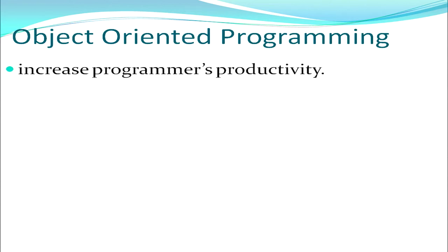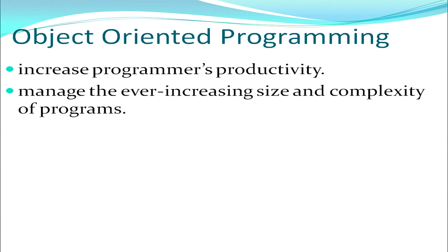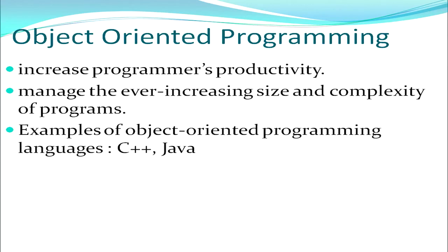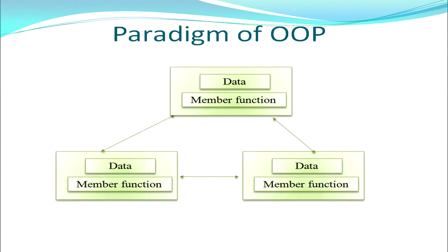First and foremost, let us understand what is object oriented programming. It is definitely a tool that helps to increase programmers' productivity. It helps to manage the increasing size and complexity of programs. We all know that if we want better productivity and more options, the program becomes more and more complex. To manage these complex programs, object oriented programming helps a lot. We have C++, Java, and Python — all these are object oriented languages. In general terms, we have data and member functions grouped into a single unit, which we call an object.